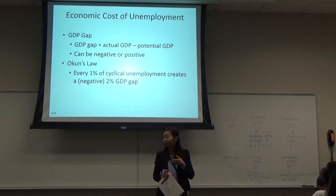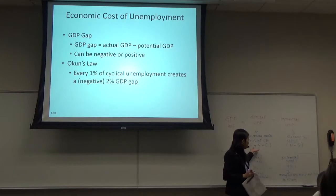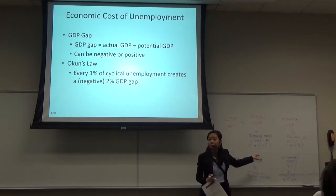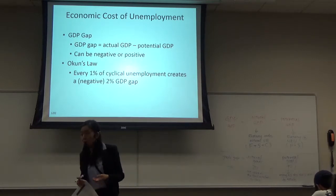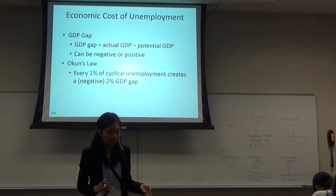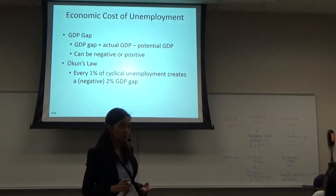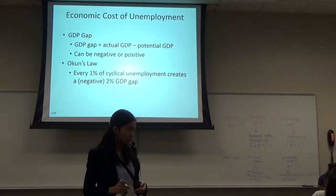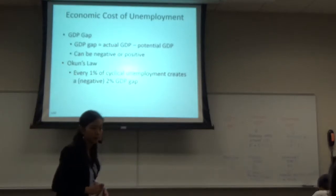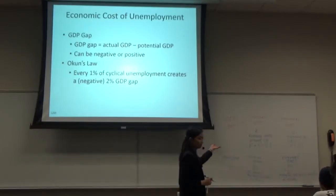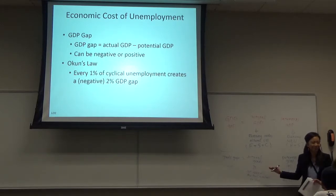Going back to the economy, it's the same thing. If we have a recession, some laborers are out of jobs — they could be producing goods and services, but because of the recession they were laid off. As a result, our economy cannot reach its potential GDP. That's because of cyclical unemployment — just like you couldn't reach your potential grade because of the party.